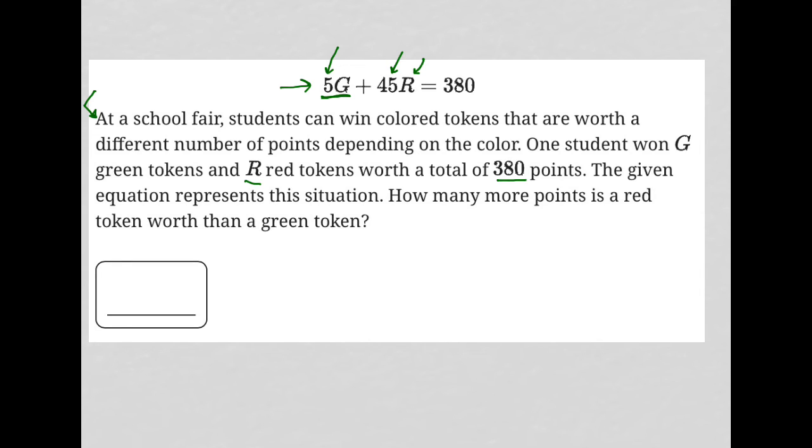So a red token is worth 45 points. A green token is worth 5 points. Therefore, a red token is worth 40 more points than a green token. And that's what the question is asking. How many more points is a red token worth than a green token? That answer would be 40.